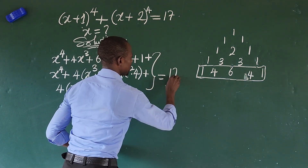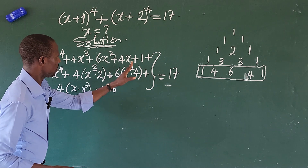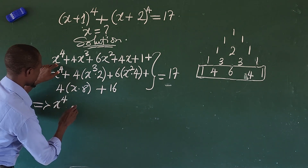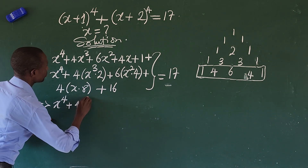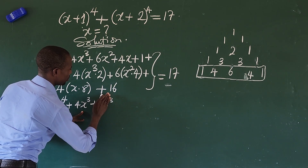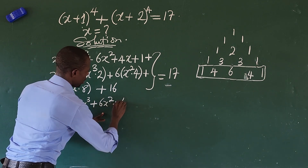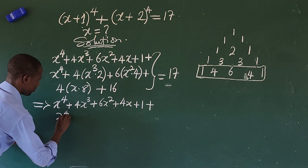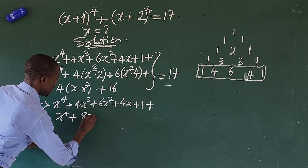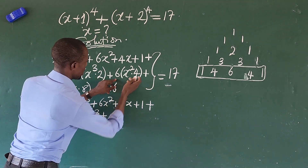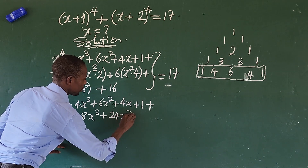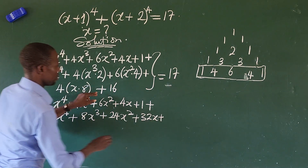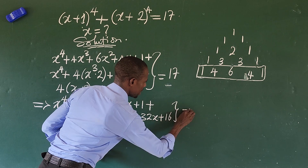So let's go ahead and add up everything. Opening up the brackets: we have x to the power of four plus 4x to the power of three plus 6x to the power of two plus 4x plus 1, plus x to the power of four plus 8x to the power of three plus 24x to the power of two plus 32x plus 16. So everything is equal to 17.